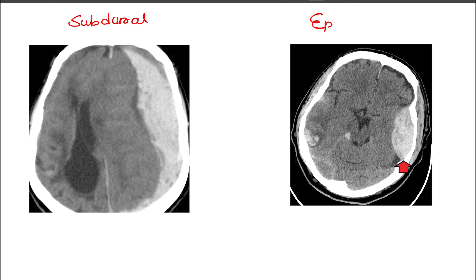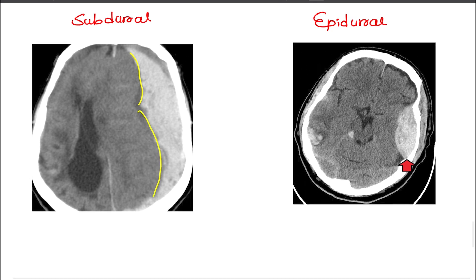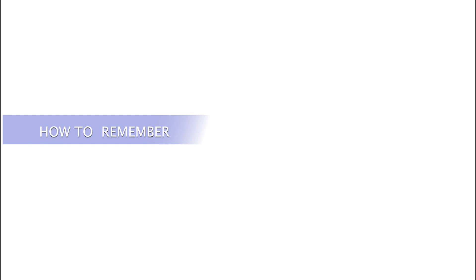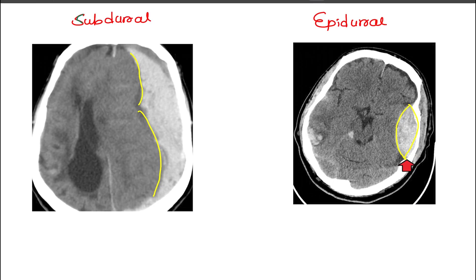What is the difference between subdural and epidural hemorrhage? Subdural is crescent-shaped. You can remember this with a mnemonic: subdural hematoma starts with S, and it looks like a C-shape or crescent shape. Epidural hematoma, on the other hand, is lentiform — convex or lens-shaped. So: crescent for subdural, convex/lens for epidural.